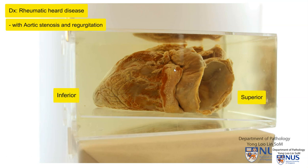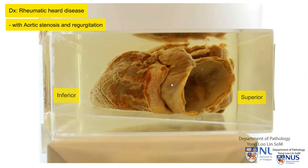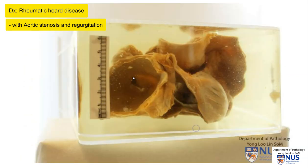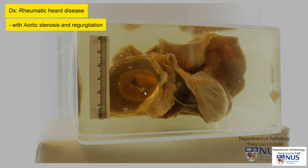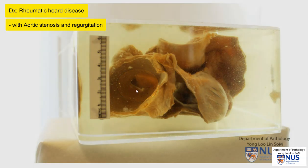Here is actually the left lateral surface of the heart. This is the apex and this is inferior and this is superior. And here is the left atrium. Looking into this, here is the orifice or the opening of the mitral valve. We can see that it is quite deformed and it's quite slit-like in some areas.